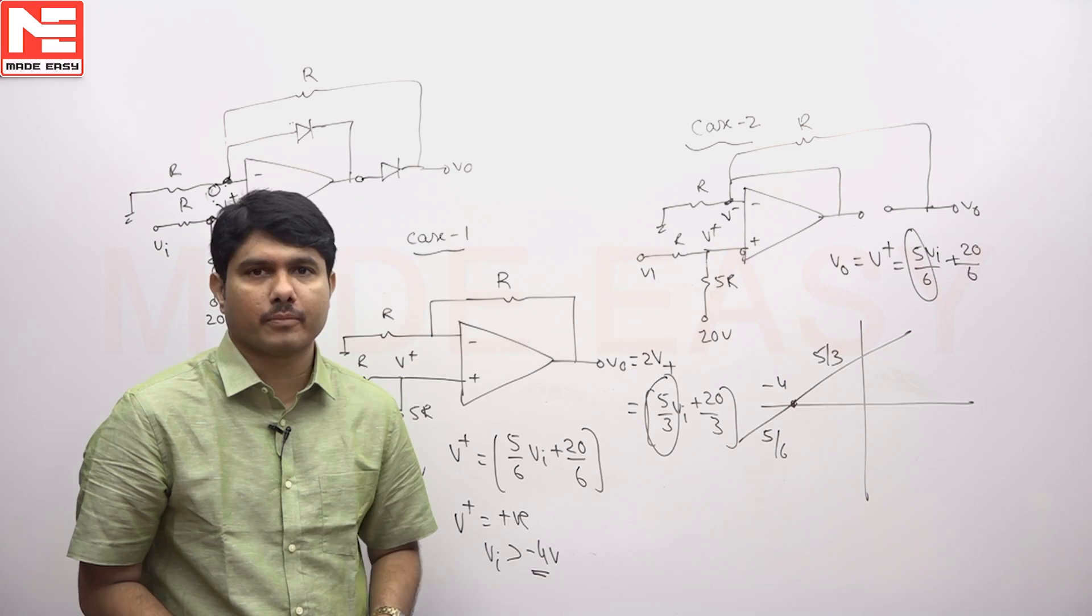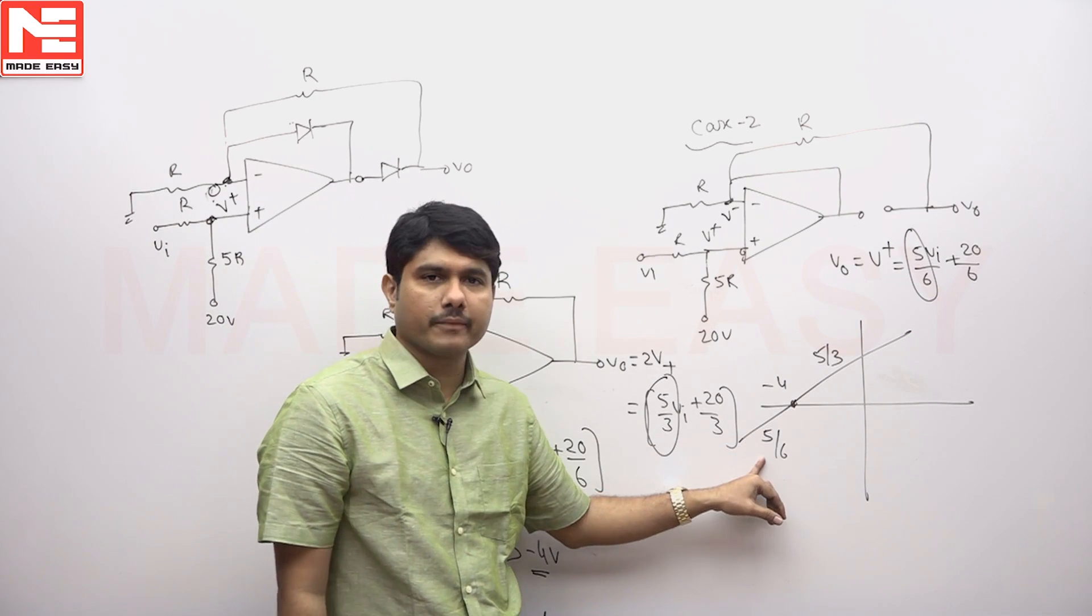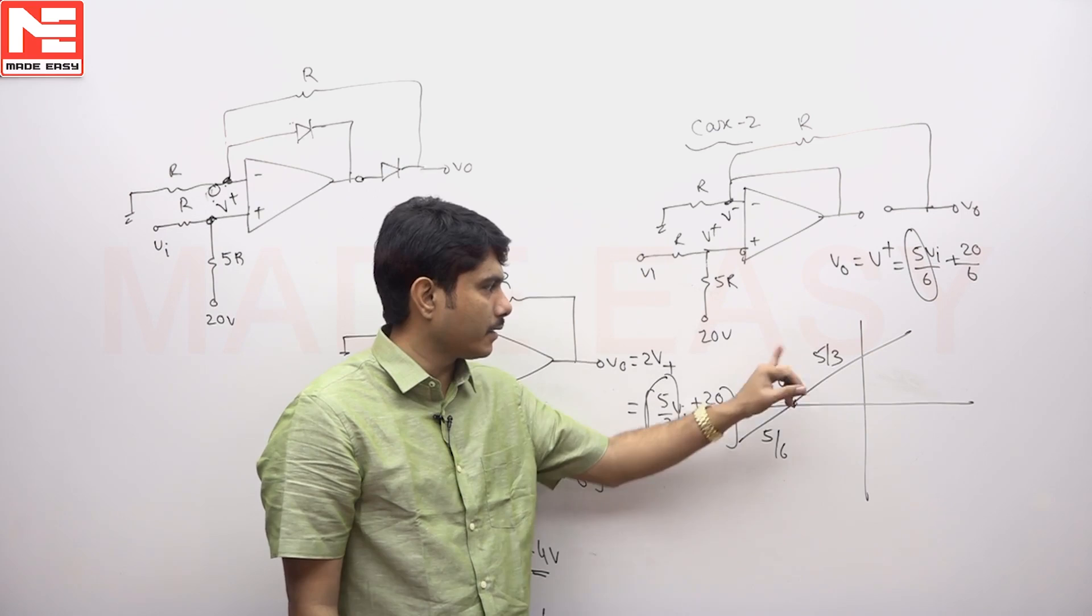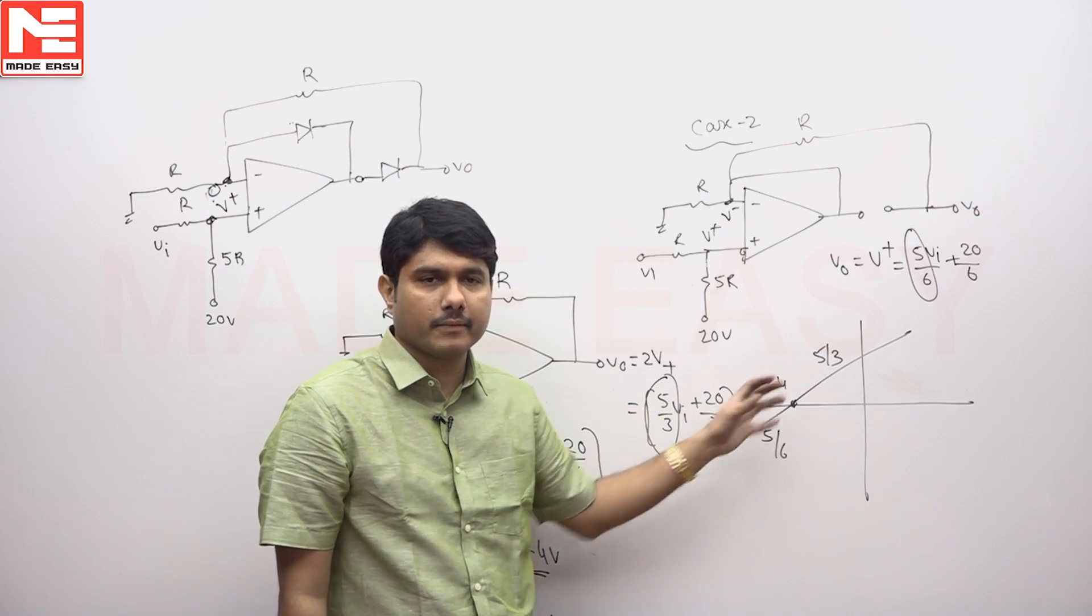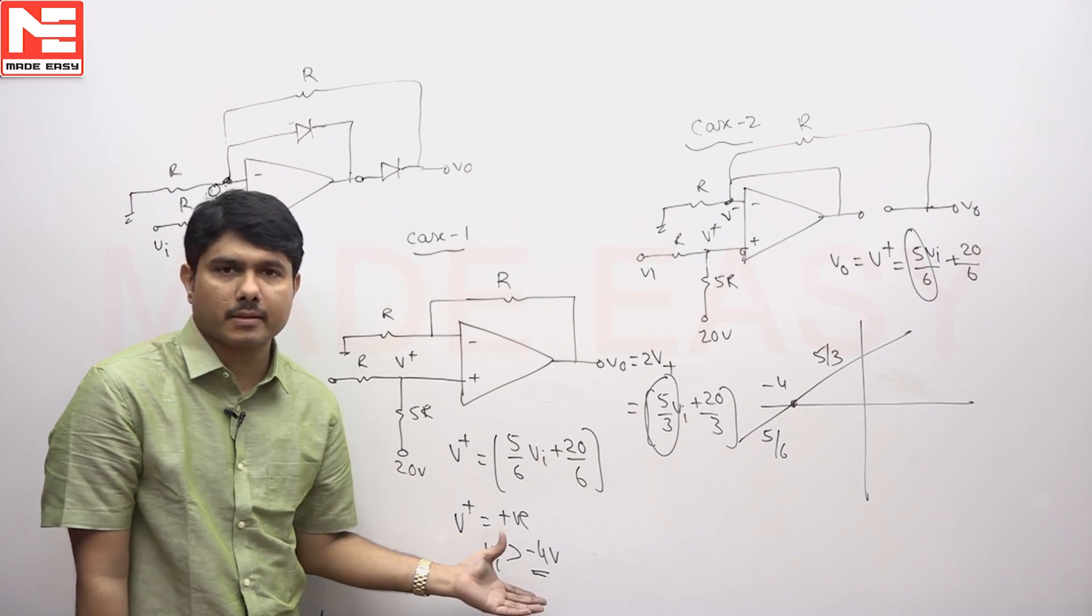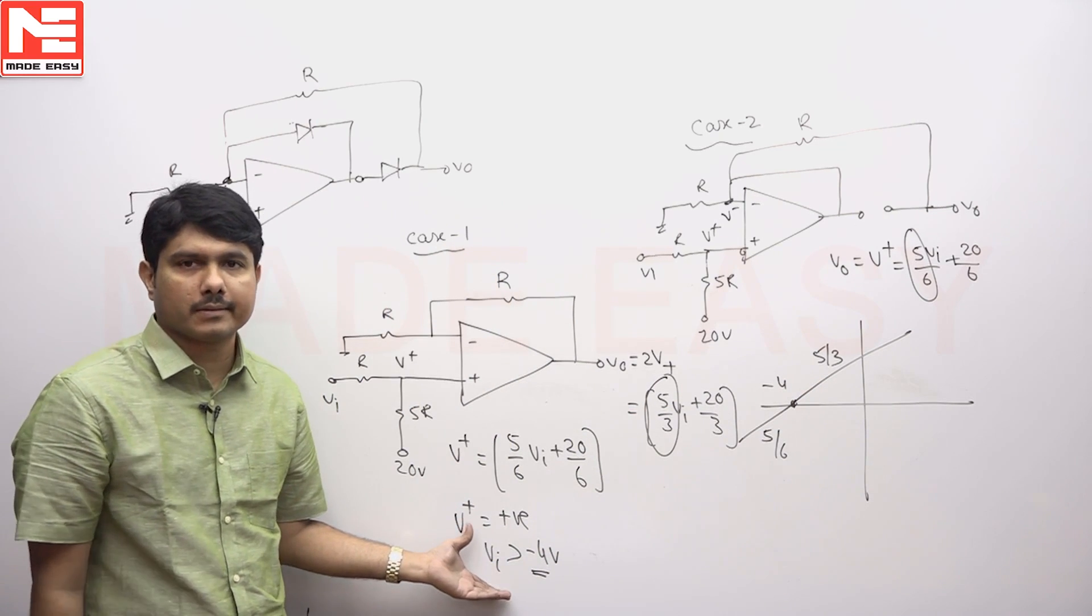The slope is not the same for both cases. Less than minus 4 it is showing 5 by 6, greater than minus 4 it is showing 5 by 3. It's a very simple trick called open loop system analysis I have done. This must be the answer for it.